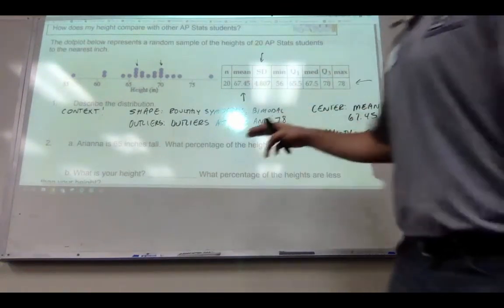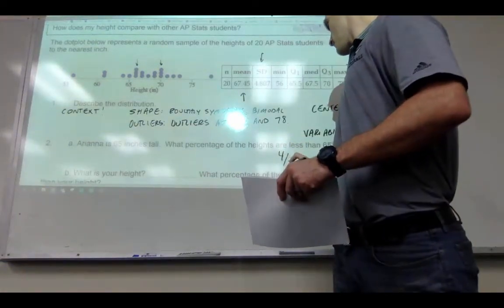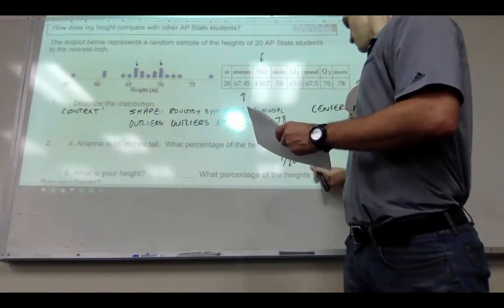Ariana is 65 inches tall. What percentage of the heights are less than 65? Four of them of the 20 is 25%.